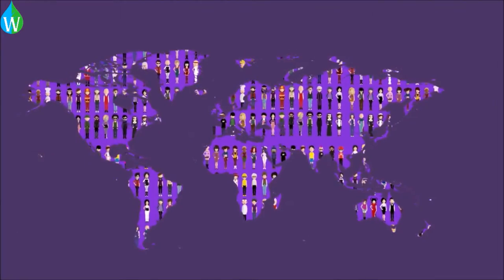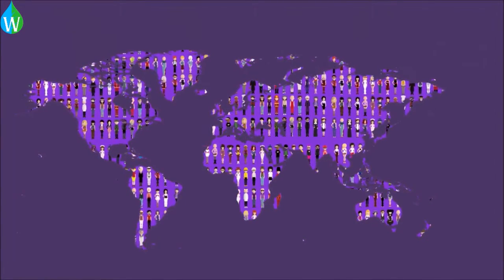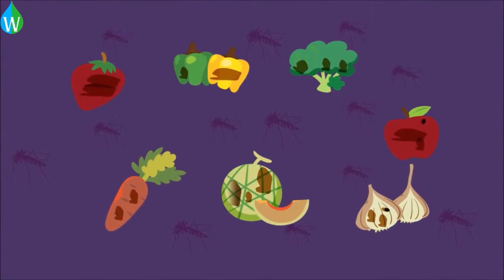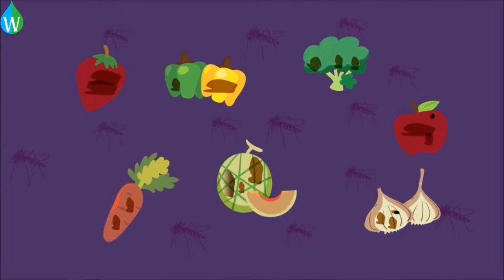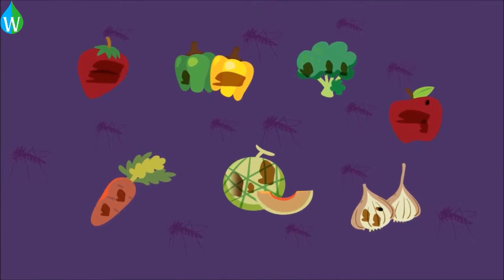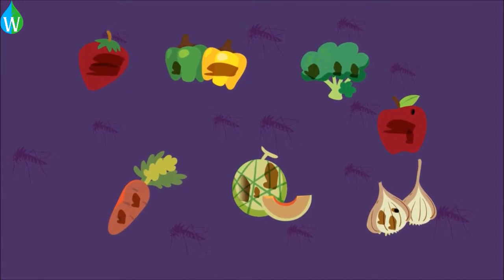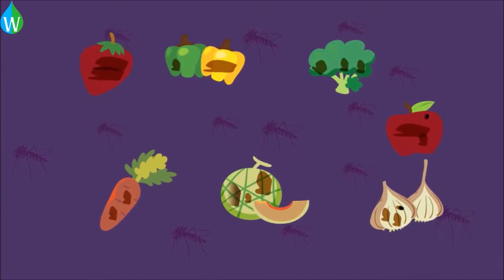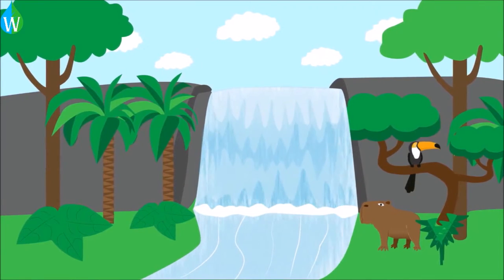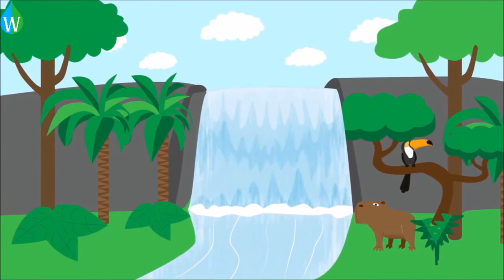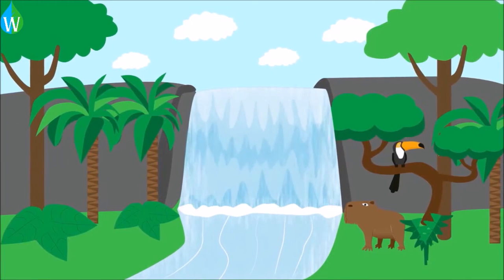Reduced biodiversity means millions, even billions of people face a future where food supplies are more vulnerable to pests and disease, fresh water is in short supply, and we have no medicines to cure potentially deadly illnesses. Biodiversity protects water resources — it cleans water, controls the route it takes, and stabilizes banks, thus reducing flood risks.